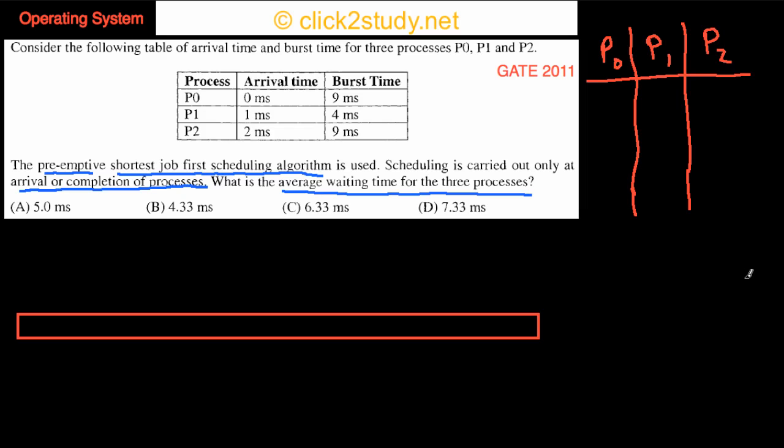What I'm going to do is first write the initial burst out here: 9, 4, and 9. I write them because they change. And out here I'm going to mark their arrival times. So 0, and this is where P0 arrives.